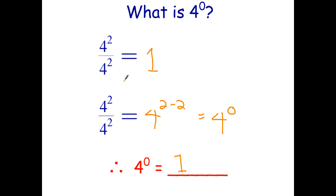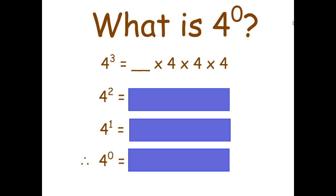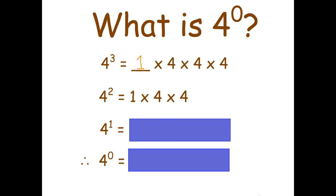I'm going to show you another way to justify it. When you're learning something new, it's always a good idea to look at it a couple of different ways to convince yourself that what you're doing is correct. So: four to the power of three equals four times four times four — three factors of four. You can also write this as one times four times four times four. Similarly, four to the power of two is one times four times four — two factors of four.